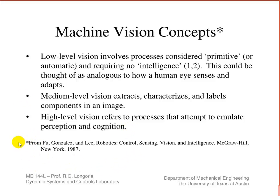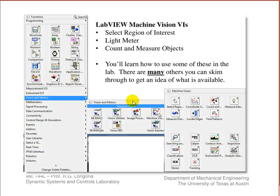You can find references with some of these basic concepts in books on vision and robotics. To find the machine vision VIs, open the menu and if you've installed the Vision and Motion VIs, you'll find Machine Vision there with several submenus. There's a lot here and we won't touch on all of it — we're going to use some in examples and lab work, but I'll talk about a few and show you how we use them.